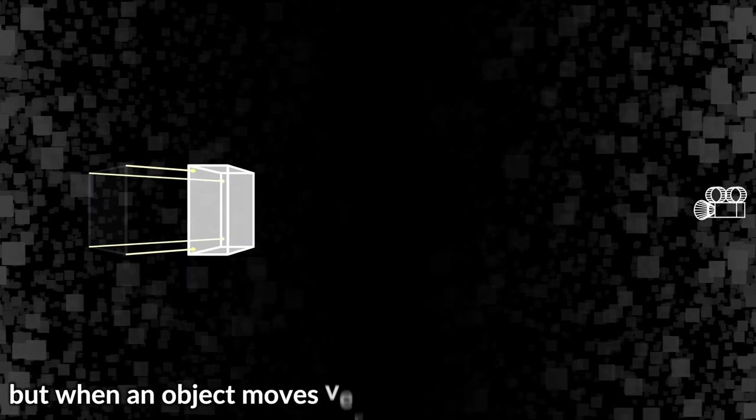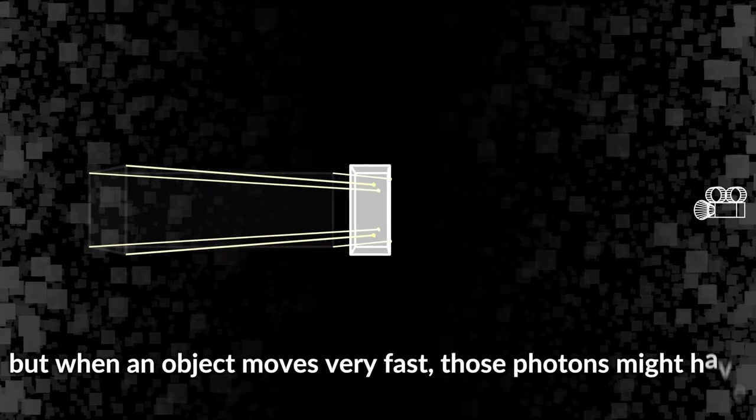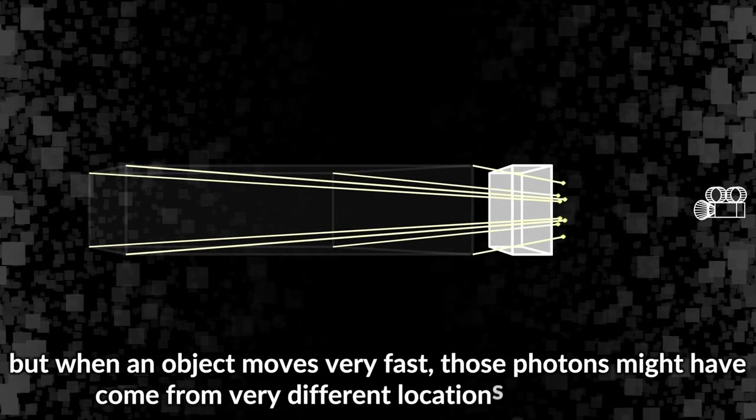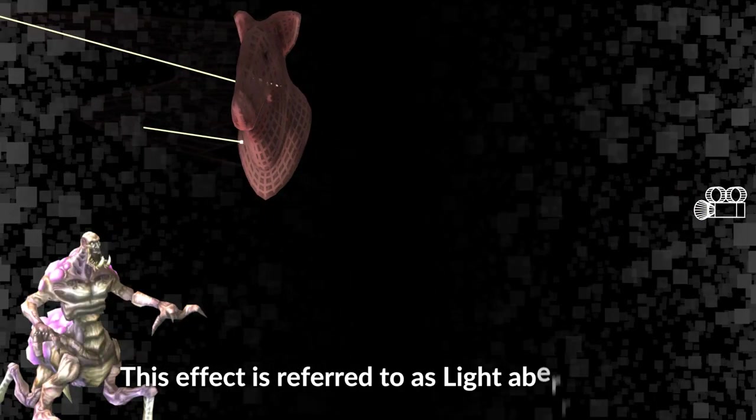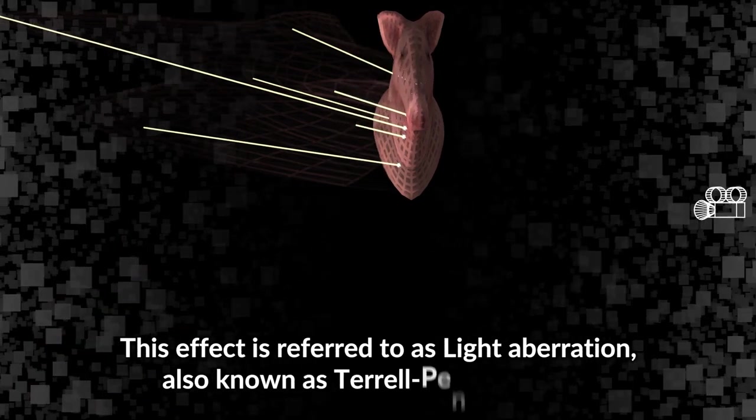'Now', or one screenshot of what you see, is defined by photons reaching your eye at the same time. But when an object moves very fast, those photons might have come from very different locations of the object in both space and time. This effect is referred to as light aberration, also known as Terrell-Penrose effect.